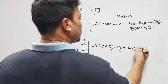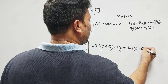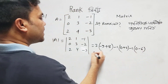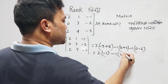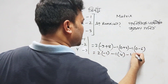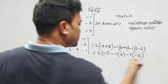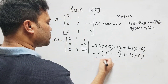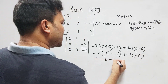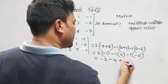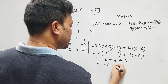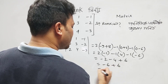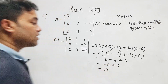That means 2 minus 1, minus 1, plus 4, minus 1, minus 6. That means that is equal to minus 2 minus 4 plus 6, that means that is equal to minus 6 plus 6, equal to zero.